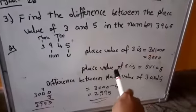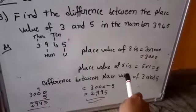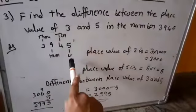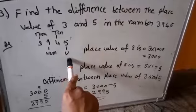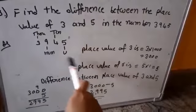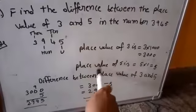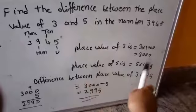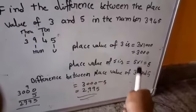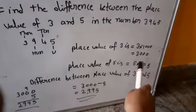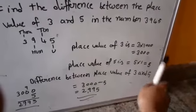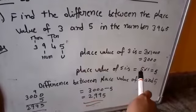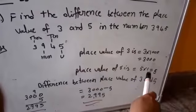Next step: place value of 5. In this figure, 5 is in the units place. Units place means 1. That's why place value of 5 is equal to 5 into 1, which equals 5. So the place value of 5 is 5.